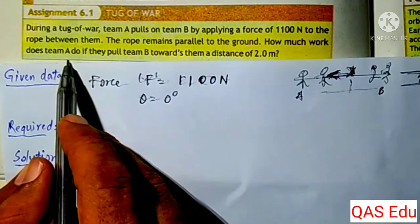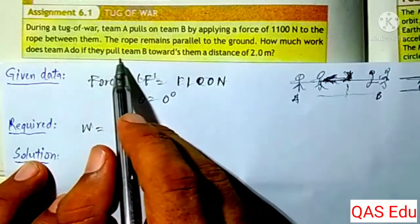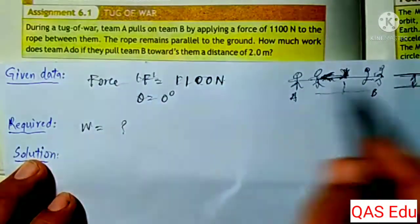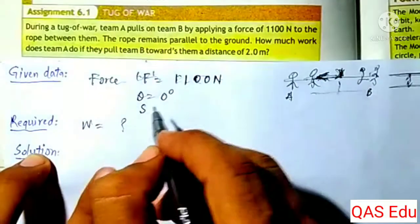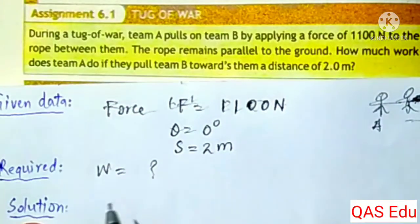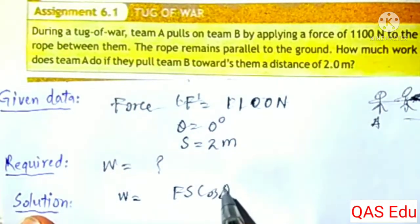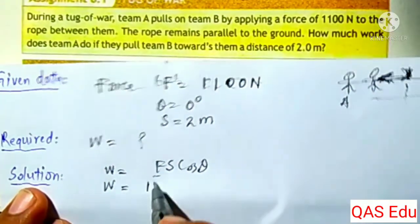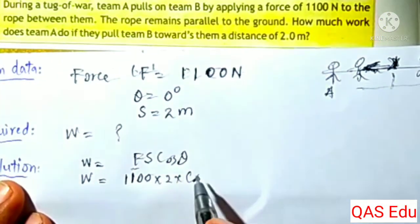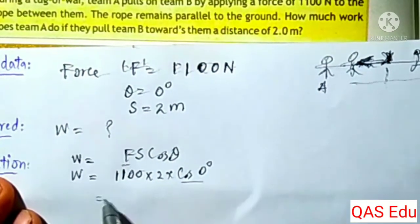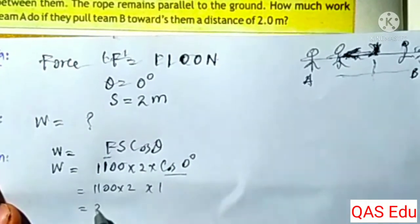How much work does Team A do? If they pull Team B towards them, the distance is 2 meters and theta is zero degrees. Using W equals F·s·cos theta: that is 1,100 multiplied by S equals 2, multiplied by cos of zero degrees.